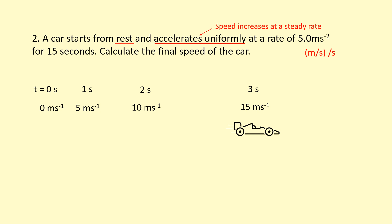Towards the end the car is traveling at a higher velocity, so it covers more distance per second. To calculate the velocity at 15 seconds, we use acceleration × time: 5 m/s² × 15 s = 75 m/s.